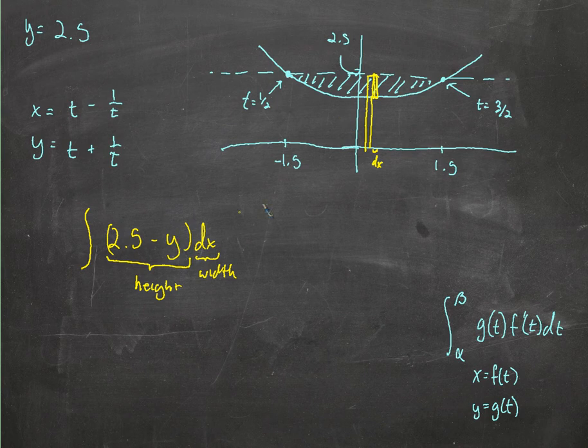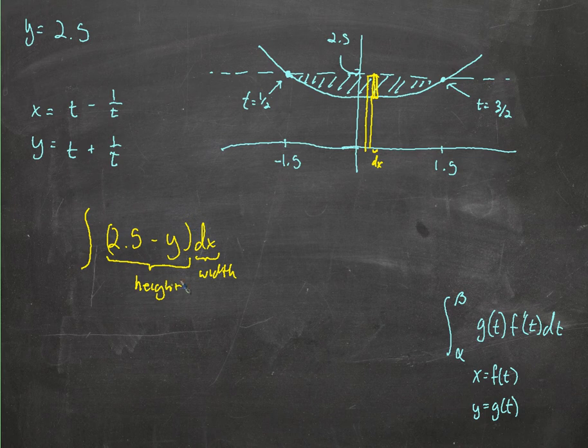So if I want to set up an integral, it's going to be something that finds the height and width of every single little rectangle, and then the integral is, by definition, the cumulative sum of all of that stuff. So that's why he set that up, kind of ignoring that it was parametric at first, and then replacing it with the parametric bits.